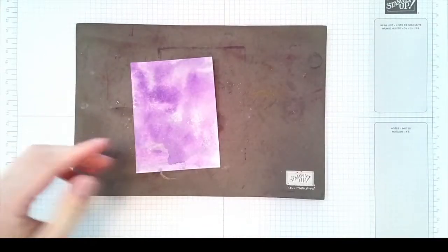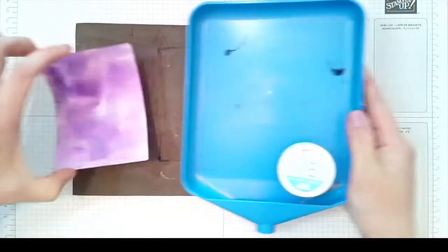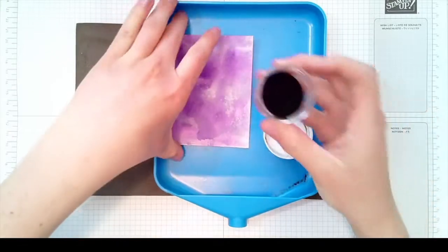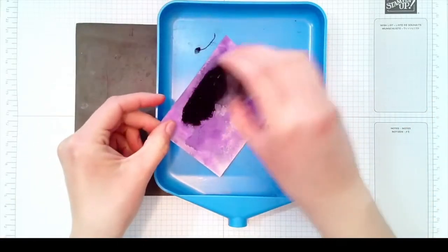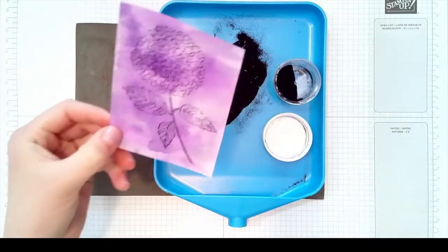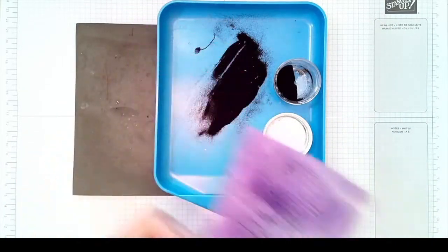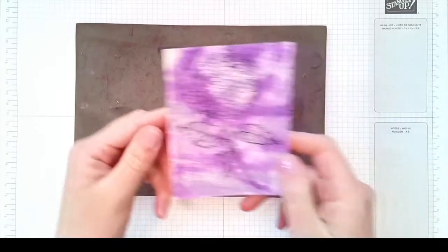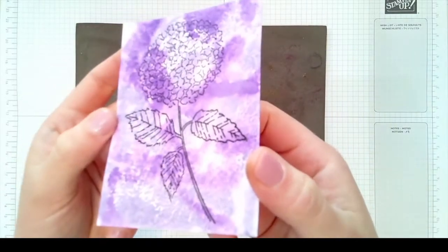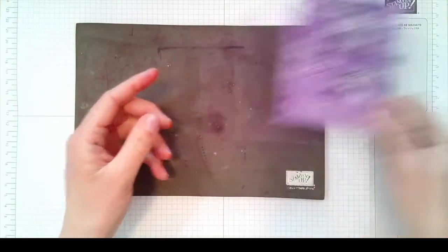I will be using some black embossing powder. Pour your embossing powder over there and then you'll use your heat tool to heat set it. Once you're done with that, you should end up with something that looks like this and you'll see the embossed look.